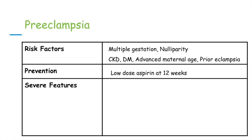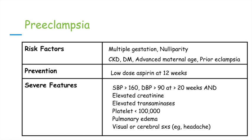It's very important to know severe symptoms or clinical features of preeclampsia. This can be identified by systolic blood pressure greater than 160 or diastolic blood pressure greater than 90 at greater than 20 weeks gestation, and abnormal lab findings or visual symptoms. Abnormal lab findings include elevated creatinine, elevated transaminases, a platelet count less than 100,000, or even pulmonary edema.